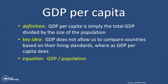GDP — gross domestic product — is a calculation of all of the economic activity operating in a particular domestic location. So if you live in South Africa, the gross domestic product of South Africa would be if you added up all of the economic activity that happened in South Africa, period. That's gross domestic product.